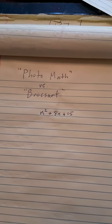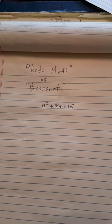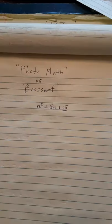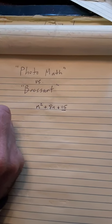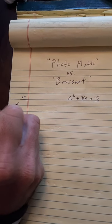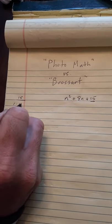So let's say I had n² + 8n + 15. I'm asking you to look at 15, and when I look at 15, I want you to consider the factors like 1 times 15 or 3 times 5.